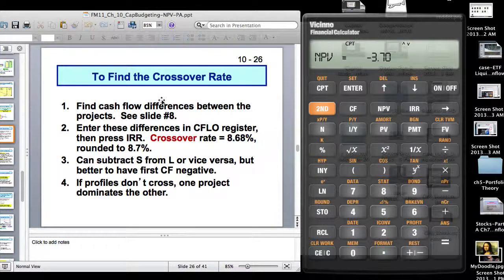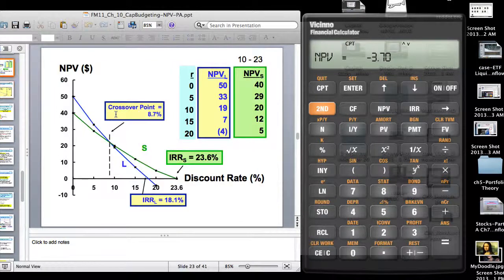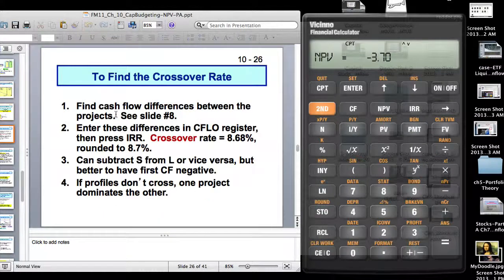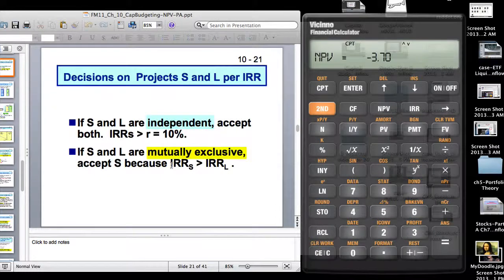So to find the crossover rate, you find the cash flow differences between the projects. I'm showing you a very simple way how to find the crossover rate instead of doing this graphical way. But the graphical way, you understand what is happening. Enter these differences in the cash flow register and press IRR and the crossover rate will pop out as simple as that.